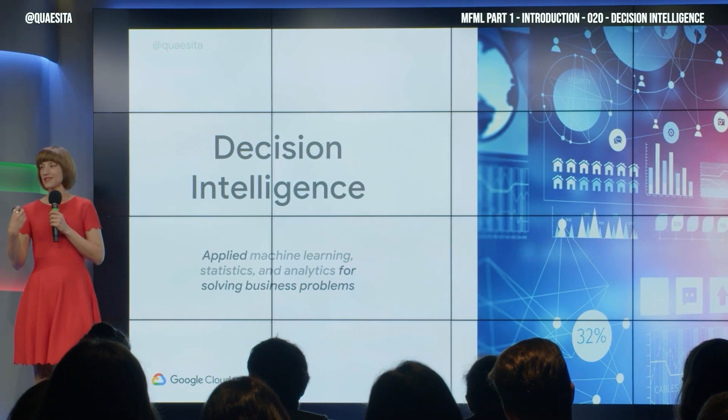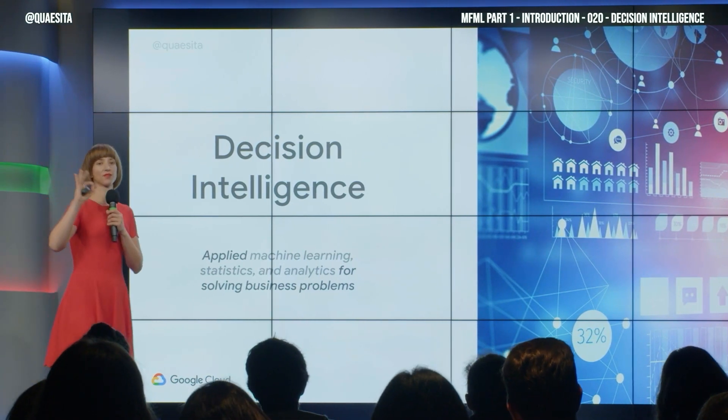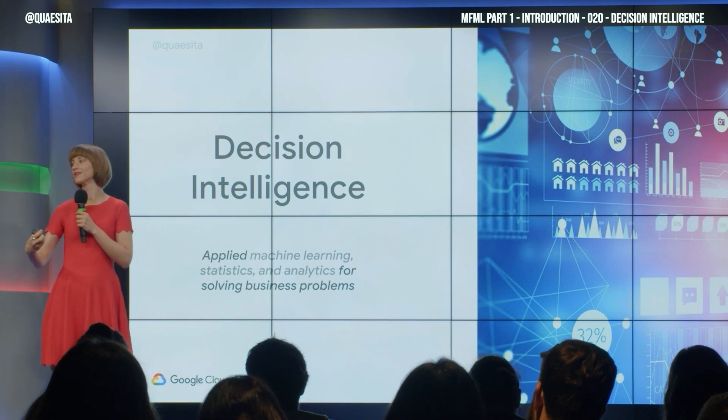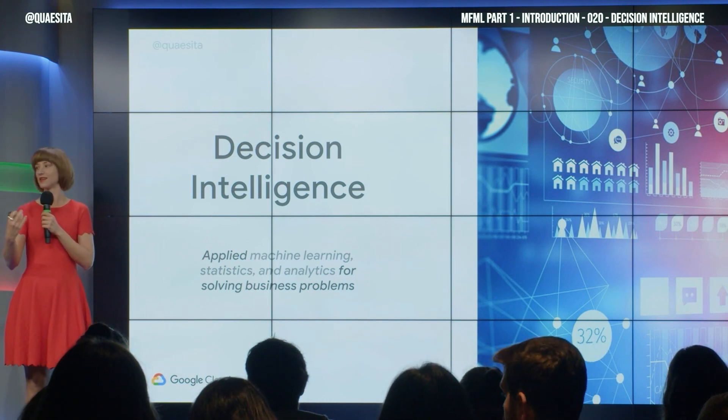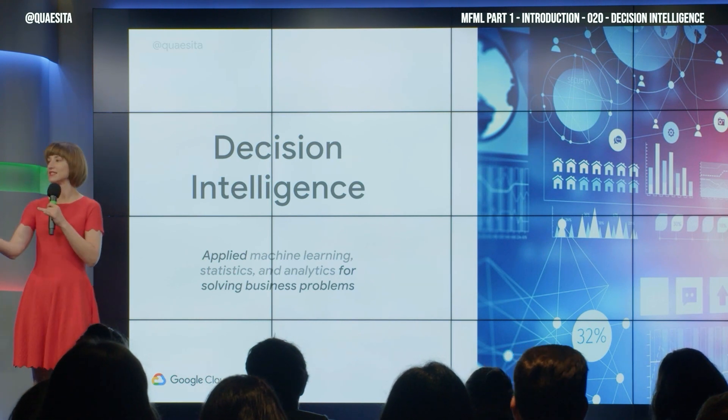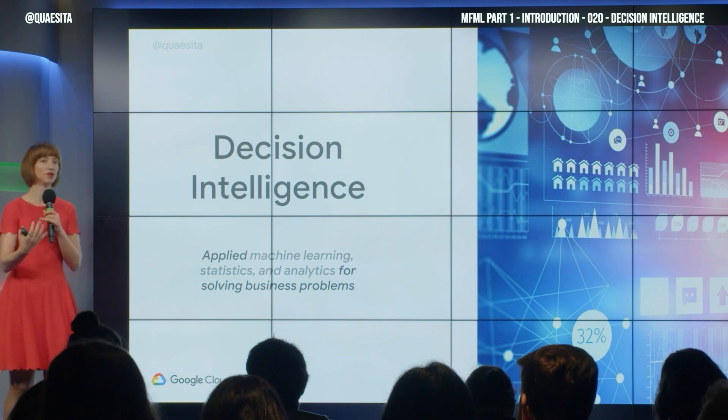Decision intelligence is about fixing that type 3 error. It is applied data science augmented by the other sanity-giving sciences like the social sciences and managerial sciences to look at decision-making as a whole.